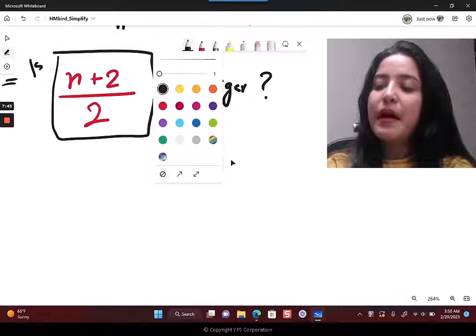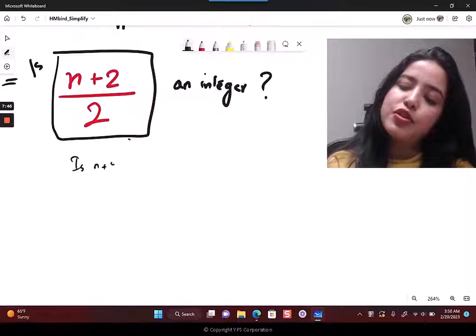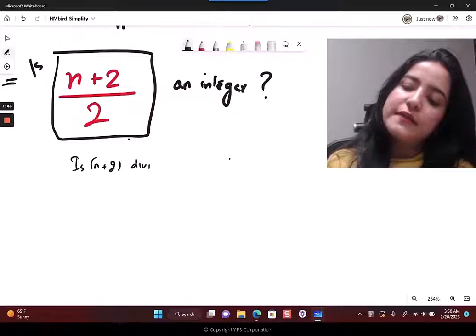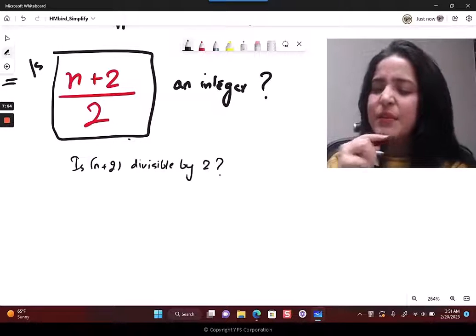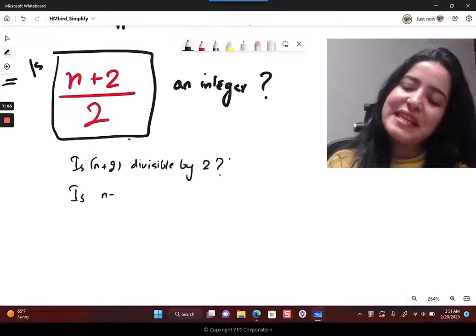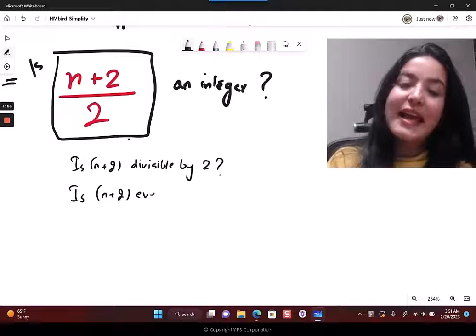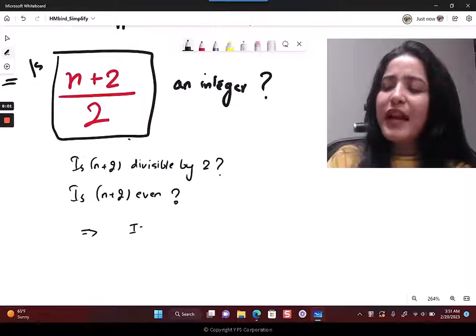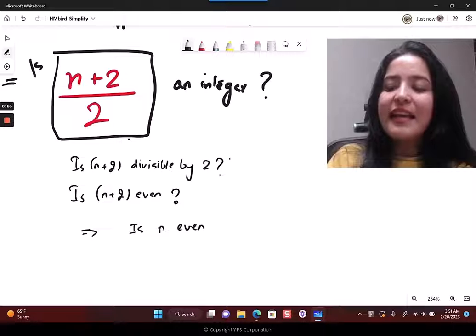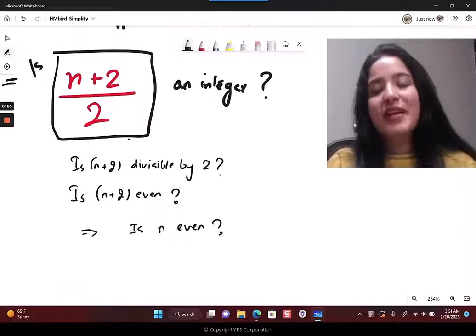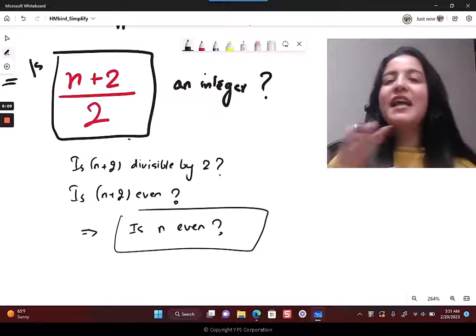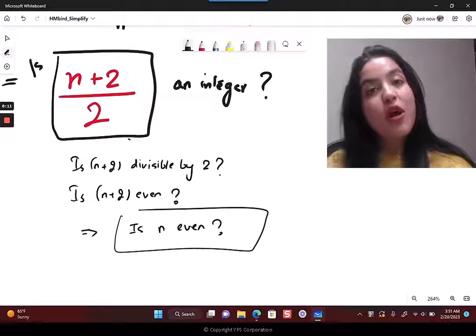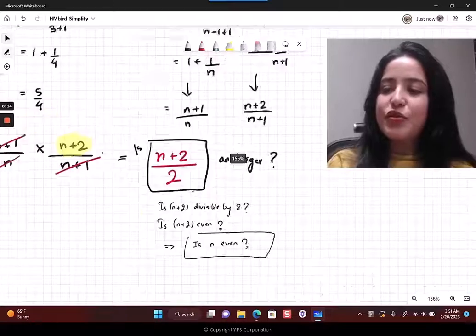That's when the result is going to be an integer. When is this divisible by 2? When n plus 2 is even. So is n plus 2 even? Further on, you can actually say is n even, because 2 is also an even number, so that's not going to really change anything.